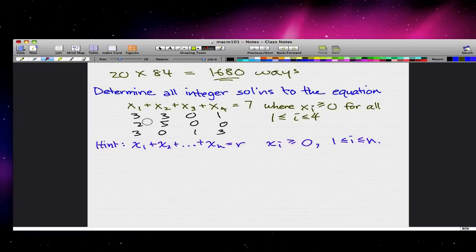So now we want to find all the integer solutions to the equation. The hint here is x1 plus x2 plus all the way to xn is equal to r. Using what we've learned in the last video, r in this case would be 7.